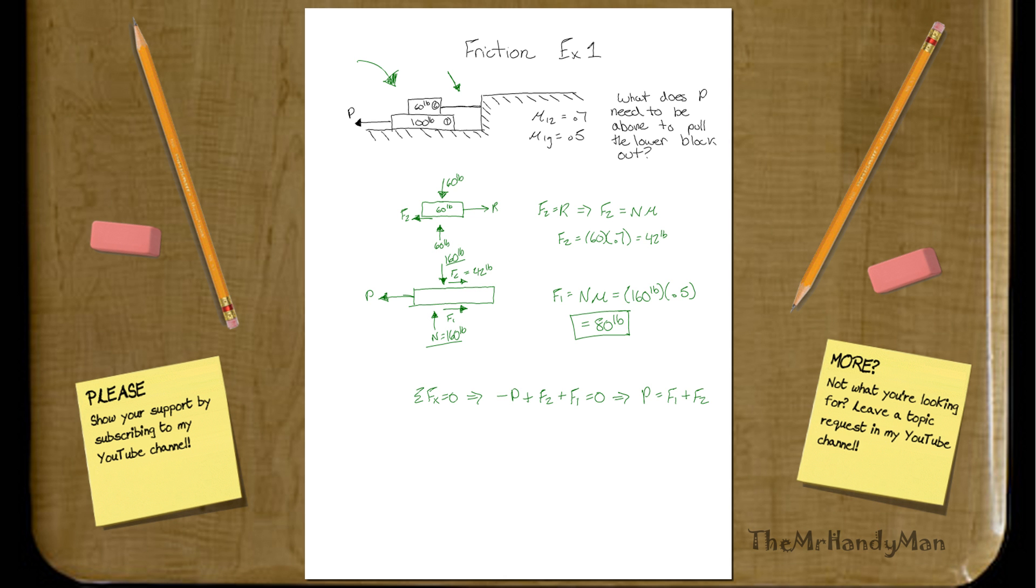Now, why are we writing it equals? The reason is because this is what we would call our breaking point. This is the maximum amount of resistance, and any more force being pulled after reaching this resulting amount, you're going to find that you get movement, and then it will no longer be static coefficient of friction but will be a kinetic one. So let's continue on. You have P will equal your force 1, which will be 80 pounds, plus force 2, which will be 42 pounds, and that equals 122 pounds.